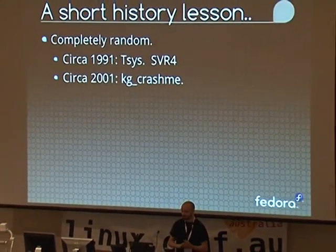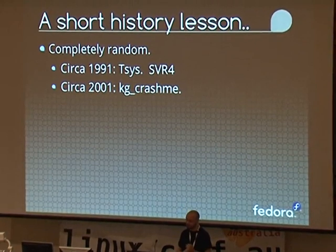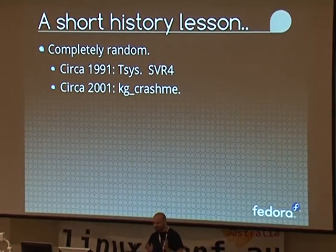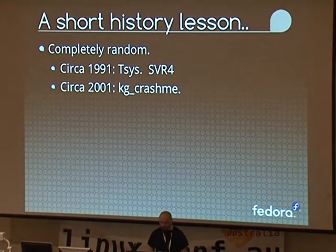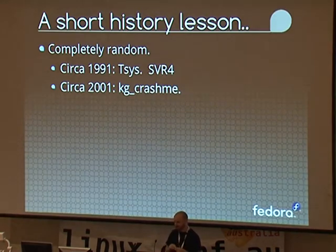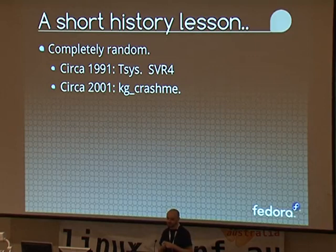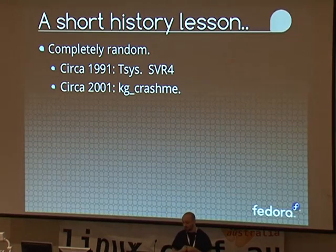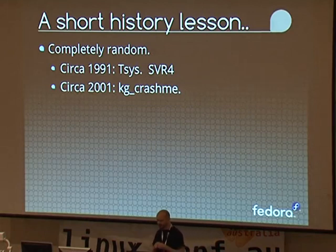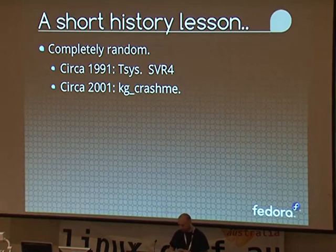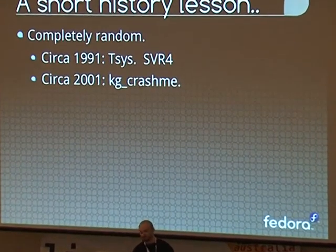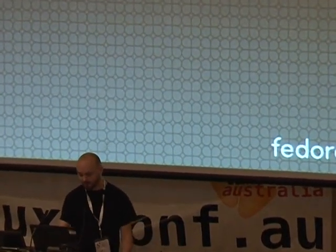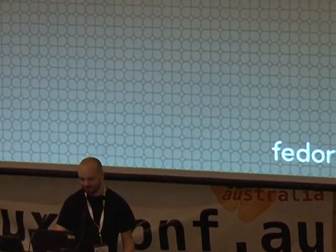The earliest one I could find was something against Unix SVR4, a tool called t-sys. It was literally just putting the output of rand straight into all the registers and calling syscalls. Fast forwarding ten years, while I was working at SuSE, Kurt Garloff wrote pretty much exactly the same tool and ran it against Linux — I think the first time someone had done this against Linux. We found a whole bunch of really silly bugs. The problem with just calling rand is the majority of system calls will just return EINVAL.